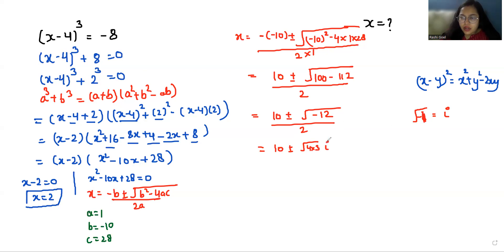This simplifies to (10 ± √(100 - 112)) / 2 = (10 ± √(-12)) / 2 = (10 ± 2i√3) / 2. Taking 2 as common: (5 ± √3i).